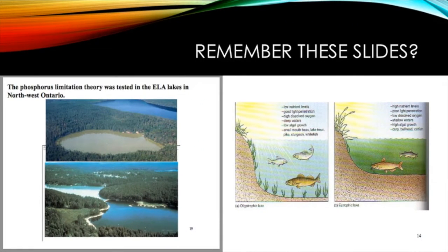After that video, let's look back at some lecture slides. These were taken from lecture 5 and on the left we have the phosphorus limitation theory. This theory was tested in the Experimental Lakes area of Northwest Ontario and it shows the effect of phosphorus — the cause of algae, the greenness, the bad clarity — and basically how we get a eutrophic lake.